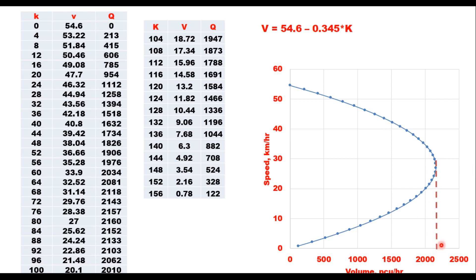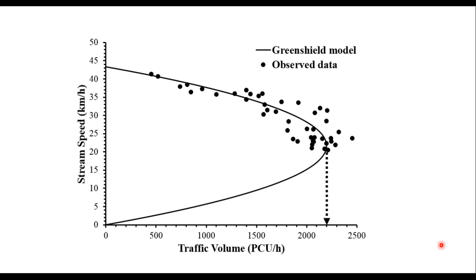This is a theoretical curve. If you want, you can plot your field data on this curve. These are the observed data and this is the Greenshield equation. So that you can see how closely your field data points lie on this curve.